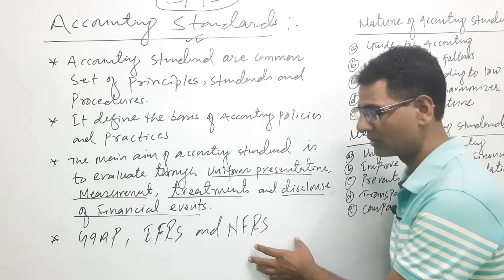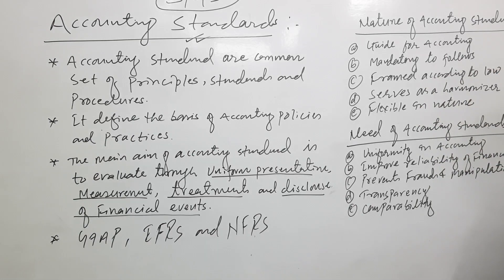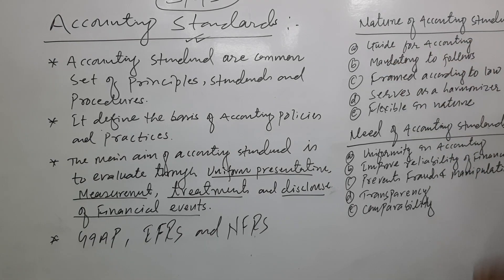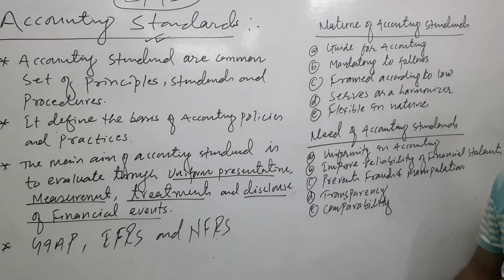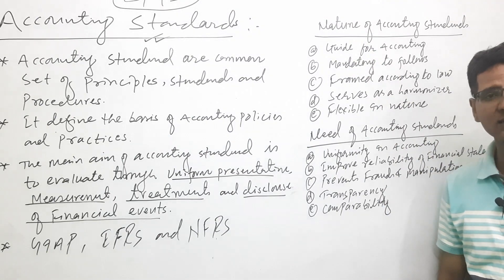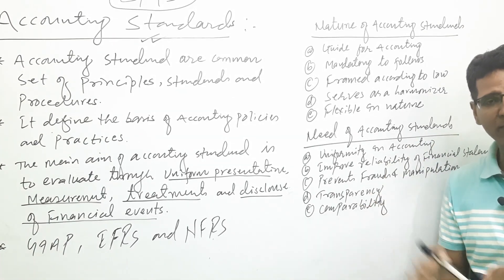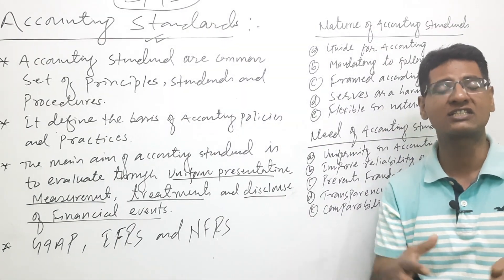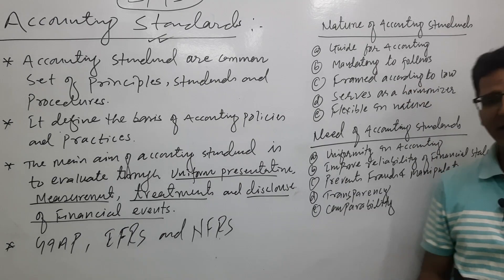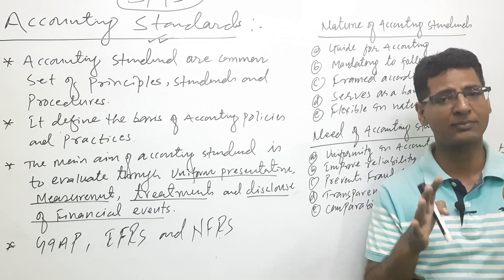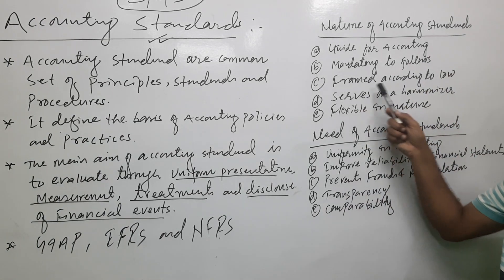There are different natures of accounting standards. They serve as a guide for accounting — we need a set of rules and regulations. In the present case, we need to follow the double entry system: every transaction has a debit and credit. These accounting standards guide the accounting system and it is mandatory to follow them. It is compulsory. This accounting standard set of norms must be followed by different institutions and different business organizations. So it is mandated and framed according to law.